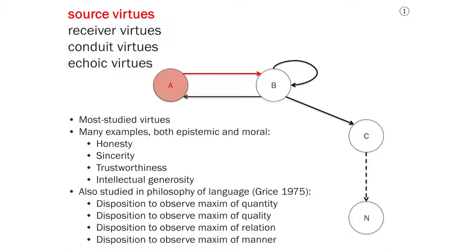These are the best-studied virtues in virtue epistemology, and there are many examples of them. Some of them involve moral character as well as epistemic character. So they include virtues like honesty, sincerity, trustworthiness, and intellectual generosity. If you're going to receive testimony from someone, if someone is going to tell you what they know, it's much better for you if you know that that person is honest. You can trust them more easily.